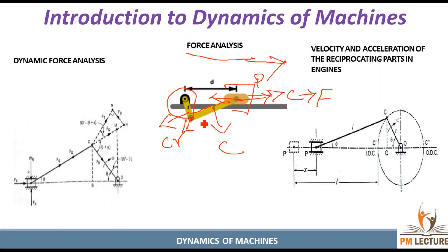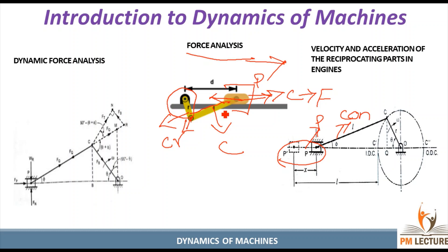If we look at the reciprocating parts, in these two parts we have to analyze the velocity and acceleration — we study the piston and also the velocity and acceleration in the connecting rod. What forces act here? There are five forces actually acting on this dynamics of force analysis.